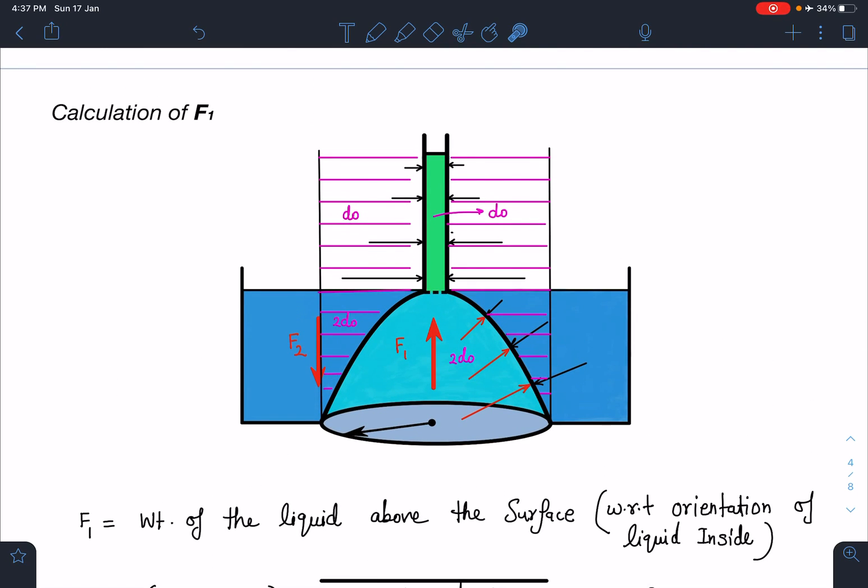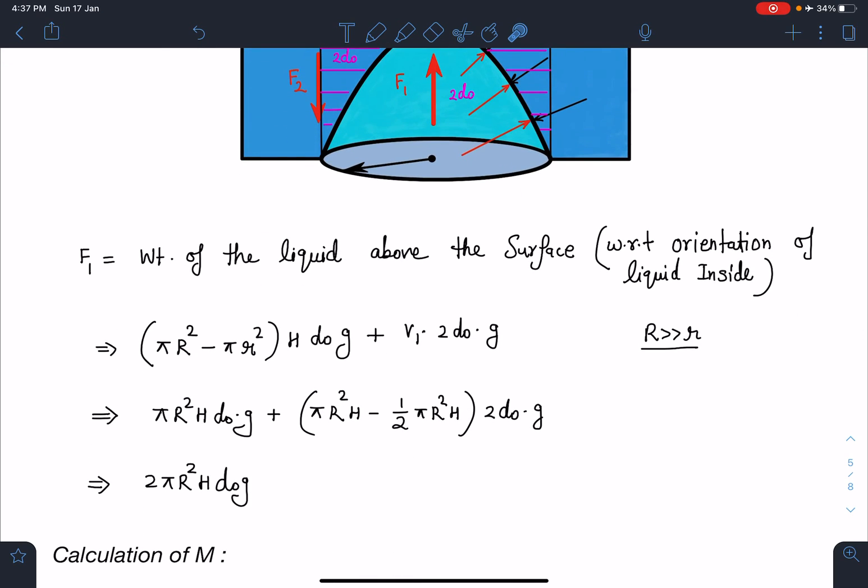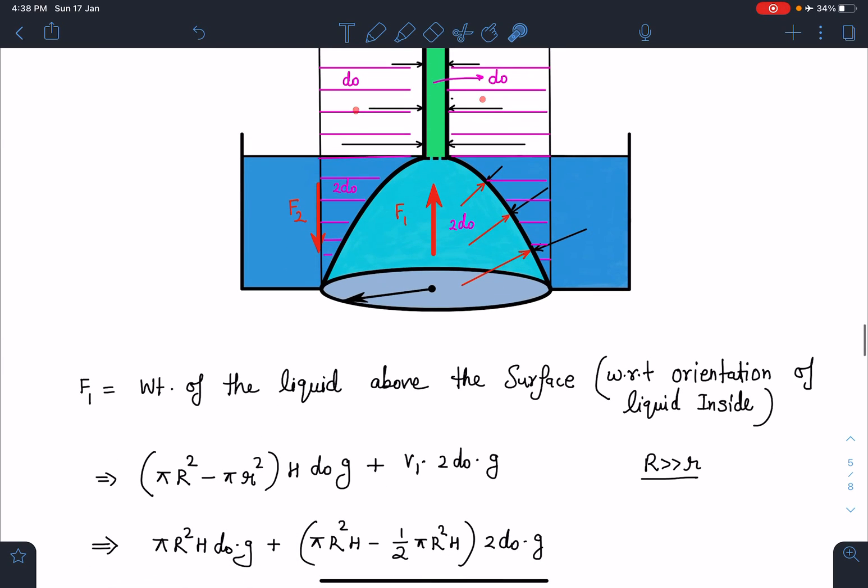Here, now imagine the weight of the liquid above the surface. If I write, I should have written like this: pi R2 squared minus R1 squared, that is bigger area minus smaller area. But you can see capital R is very very large compared to smaller, so approximately I can directly write this as pi capital R squared H. This is the volume, and the liquid density here is d naught, d naught into g, plus let's say this volume which we have calculated in the previous part also, I'm calling this as V1. So V1 into 2d naught into g. This V1 is known to us. This V1 was this cylinder minus this paraboloid.